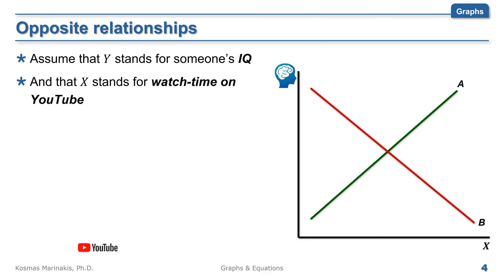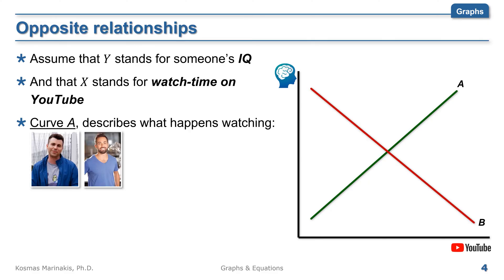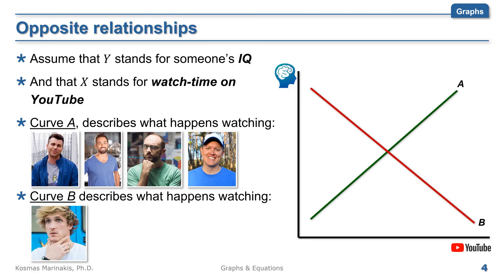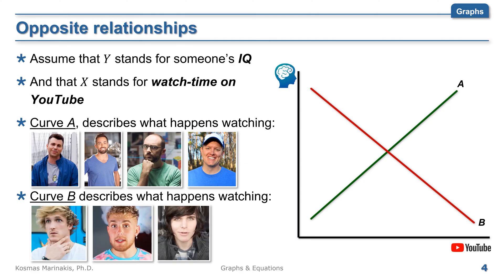Then, curve A can be a good representation of what happens to the intelligence of a person as they are watching Mark Rober or Veritasium or Vsauce or Smarter Every Day. On the other hand, curve B is a great illustration of what happens to someone's intelligence the more they are watching this guy or that guy or whoever the heck that guy is.